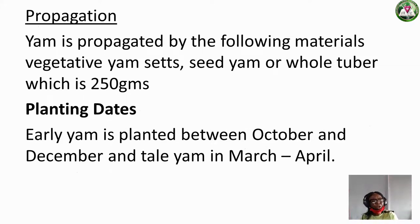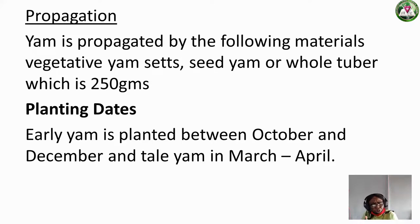For propagation: unlike maize, which is planted by seed, you don't plant the seed of yam. You propagate yam by using small yam pieces — we call it seed yam. You can also cut larger yam into pieces. Some farmers plant a whole small tuber. You can plant the small seed yam or cut pieces and put them in the ground.